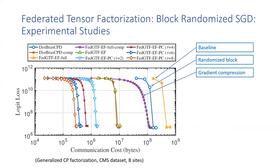or use gradient compression instead of full precision gradients, the cost is reduced significantly. We also see that gradient compression plays a more important role in communication reduction.